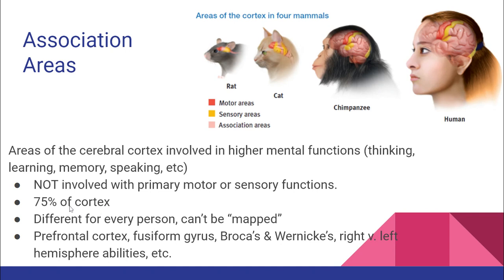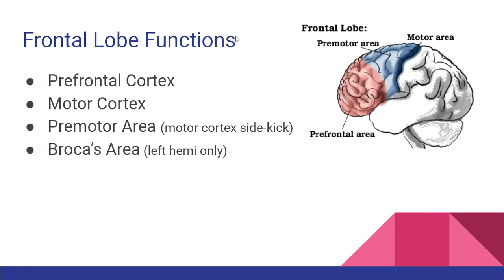Association areas make up 75% of our cerebral cortex — a major reason we can't simply map or replace a brain the way we can a heart. These areas are different for everyone because over childhood and adulthood your brain is constantly building new neural networks. Think about Jody, the girl who had her right hemisphere removed — her left side looks wildly different because her association areas had to pick up the slack.